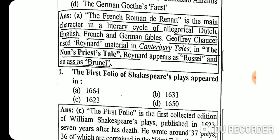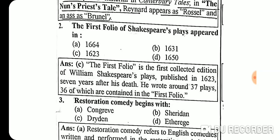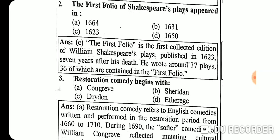Question 2: The First Folio of Shakespeare's plays appeared in 1623. The First Folio is the first collected edition of William Shakespeare's plays, published in 1623, seven years after his death. He wrote around 37 plays, 36 of which are contained in the First Folio.